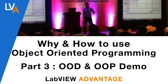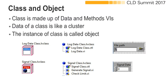Before we go deeper, I want to give a brief introduction on what a class and object is in LabVIEW. A class is made up of data and method VIs — the data is like a cluster. Here you can see two different classes: the Log Data class and the Signal class. Both have their own private data, indicated by the red key. The Log Data class has a file path data type and the Signal class has a numeric data type, and they each have their own specific methods to access that data.